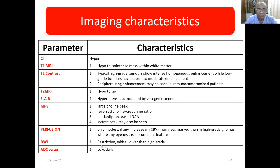On MRS, there is a large choline peak and a reversed choline-to-creatinine ratio, with a marked decrease in NAA. A lactate peak may also be seen. On perfusion scan, there will be only modest increase — not more than that of high grade gliomas — because in high grade gliomas, neoangiogenesis is a prominent feature.